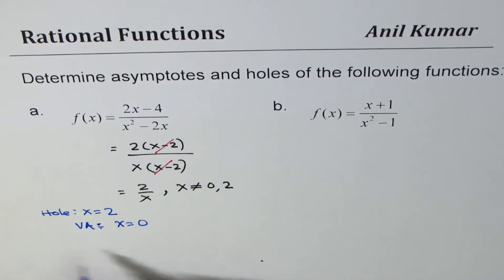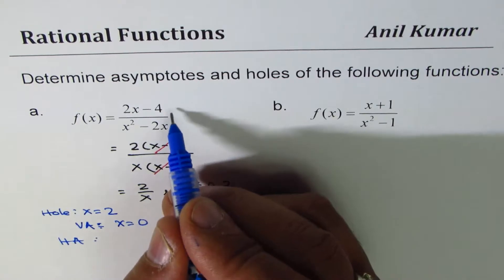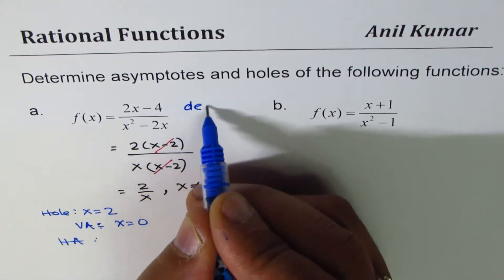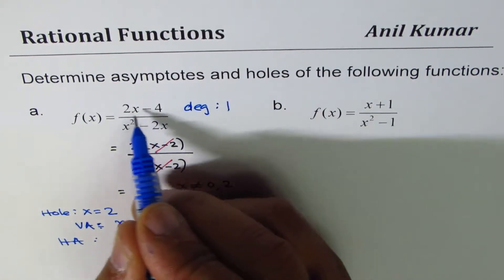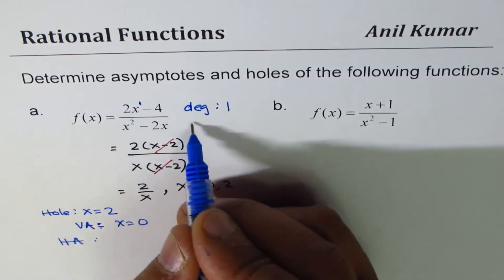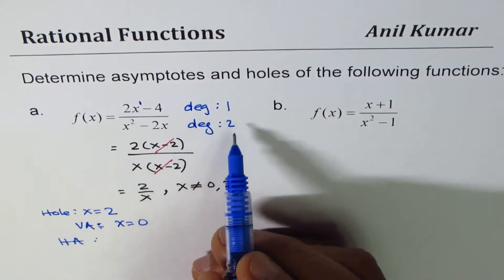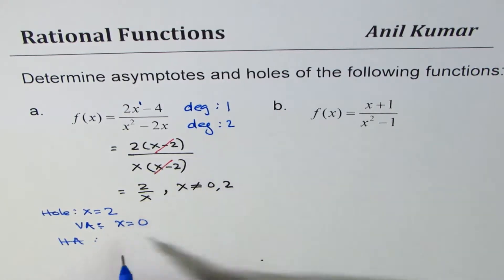How about horizontal asymptote? Let's compare the degrees. Degree of numerator is 1, x to the power of 1, and degree of denominator is 2. If degree of denominator is higher, then it is y equals 0.